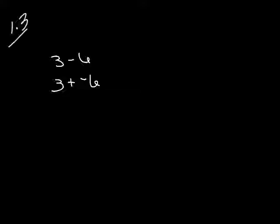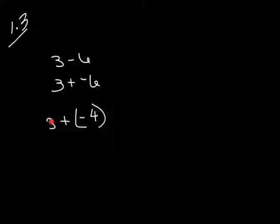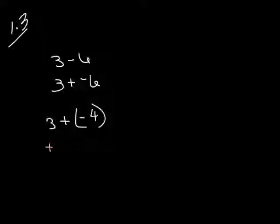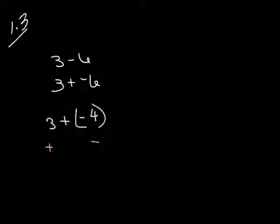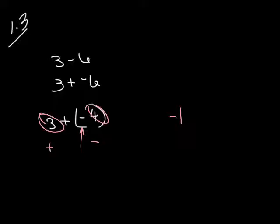In example 1, we have 3 plus negative 4. Look at the first number and the last number: the first is positive, the last is negative — the signs are different. When the signs are different, you take the difference between the 3 and the 4, ignoring the signs. The difference between 3 and 4 is 1. Then put the sign of the largest number on the answer. So 3 plus negative 4 is negative 1.